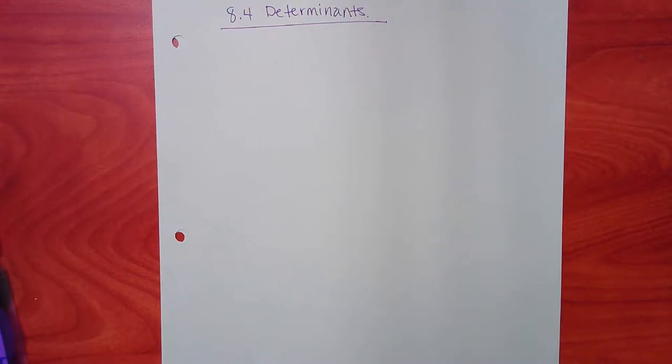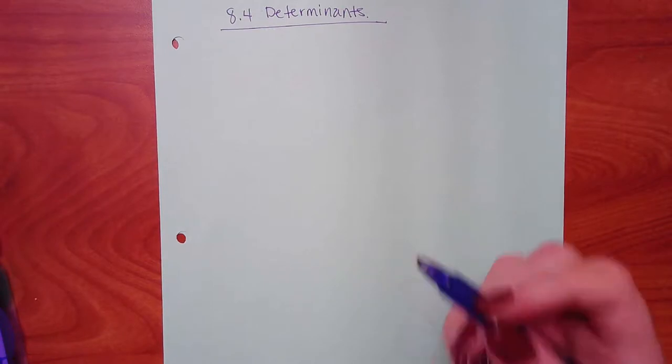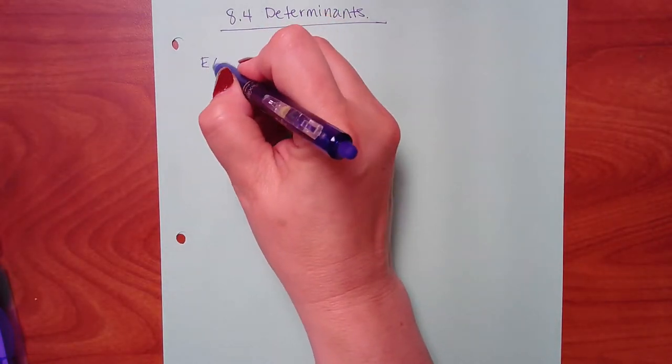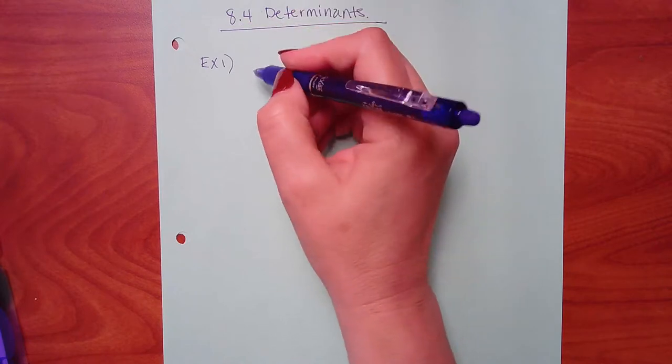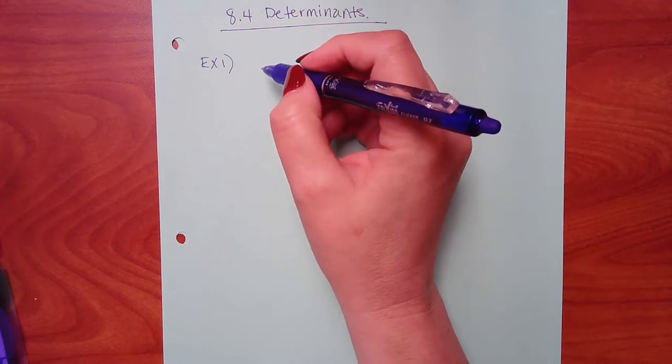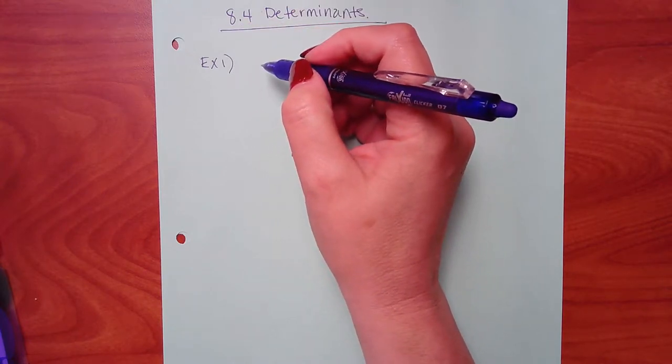Okay, so for determinants, we only have two kinds of matrices that we have to take determinants of. That's a 2 by 2 and a 3 by 3. So the 2 by 2s, we've already done it because I think when y'all were doing the Wronskian stuff, y'all were doing the determinants, right?